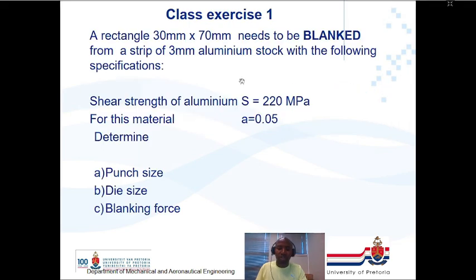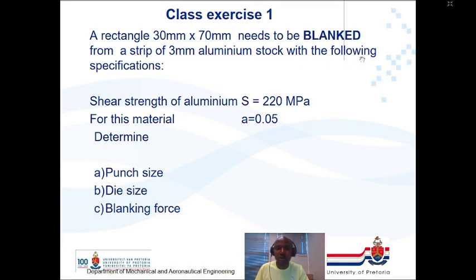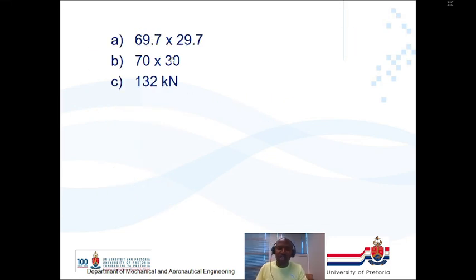Class exercise one: A rectangular blank of 30 mm × 70 mm is to be blanked from a strip of 3 mm aluminum stock. Shear strength S = 220 MPa, and allowance factor a = 0.05. Determine the punch size, die size, and blanking force. The answers are given in millimeters for sizes and 132 kilonewtons for the blanking force. Students are advised to try this independently and bring questions to consultation.